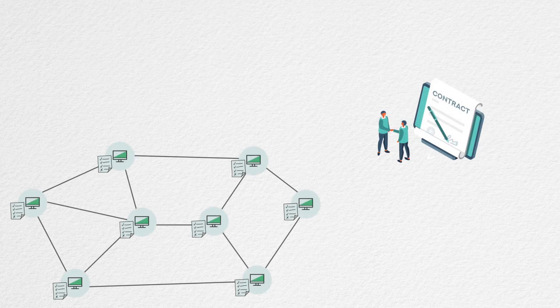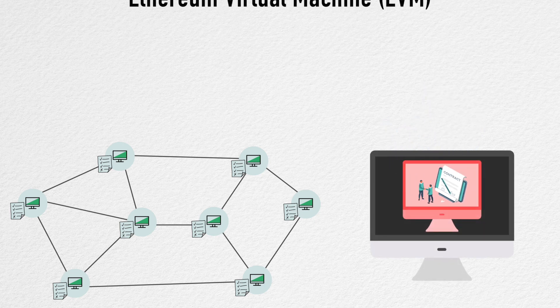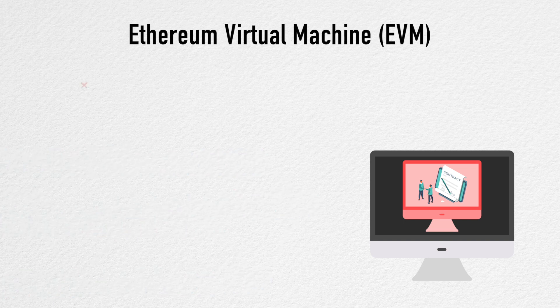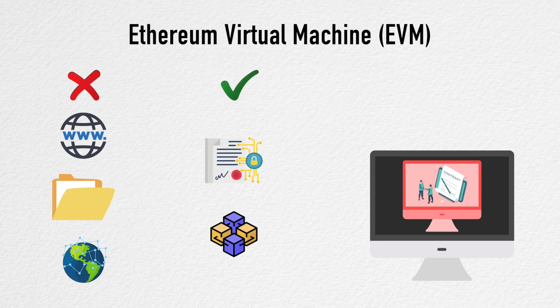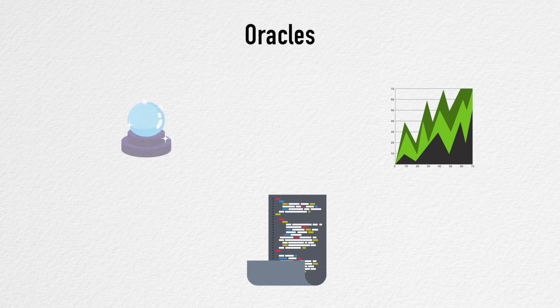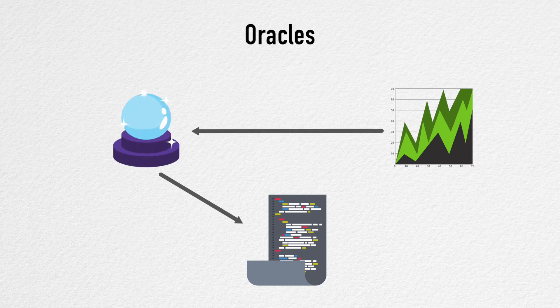When you interact with a smart contract, it is executed by every node on the Ethereum network. The execution takes place inside an Ethereum virtual machine, a specialized environment that limits what information is available to the smart contract. The code in the contract doesn't have access to the internet, files, or anything external to the blockchain itself. It has limited access to other smart contracts and information already on the blockchain. These limitations ensure we get the same result when the smart contract is executed by any node under identical conditions. However, if you need access to external data — say the price of Tesla stock — you can use oracles, which are third-party services that serve as bridges between blockchains and the outside world.